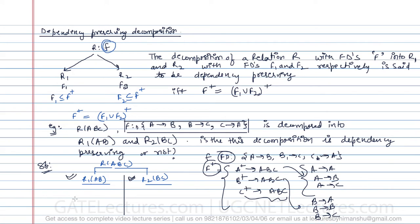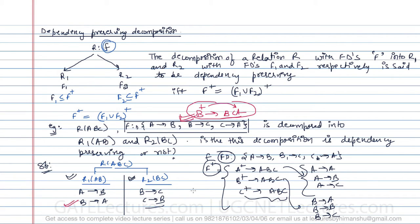For relation R1(A, B), the valid functional dependencies are A→B and B→A. B→A is valid because in the original relation, B closure contains A. For relation R2(B, C), we have B→C and C→B, because C closure gives ABC (which includes B) and B closure gives ABC (which includes C).